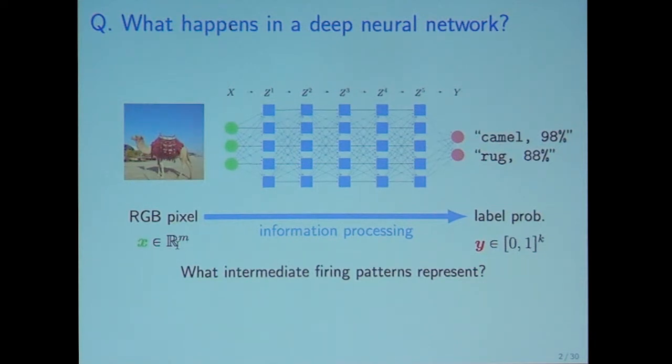So there is some information transformation in the neural network. My research question is, what do intermediate firing patterns represent?